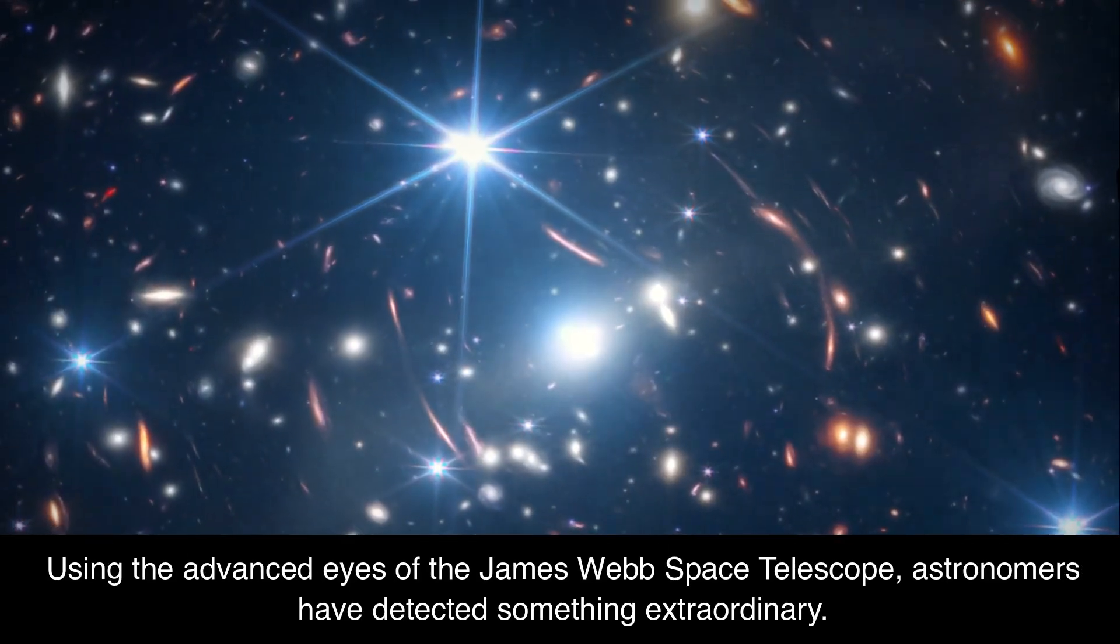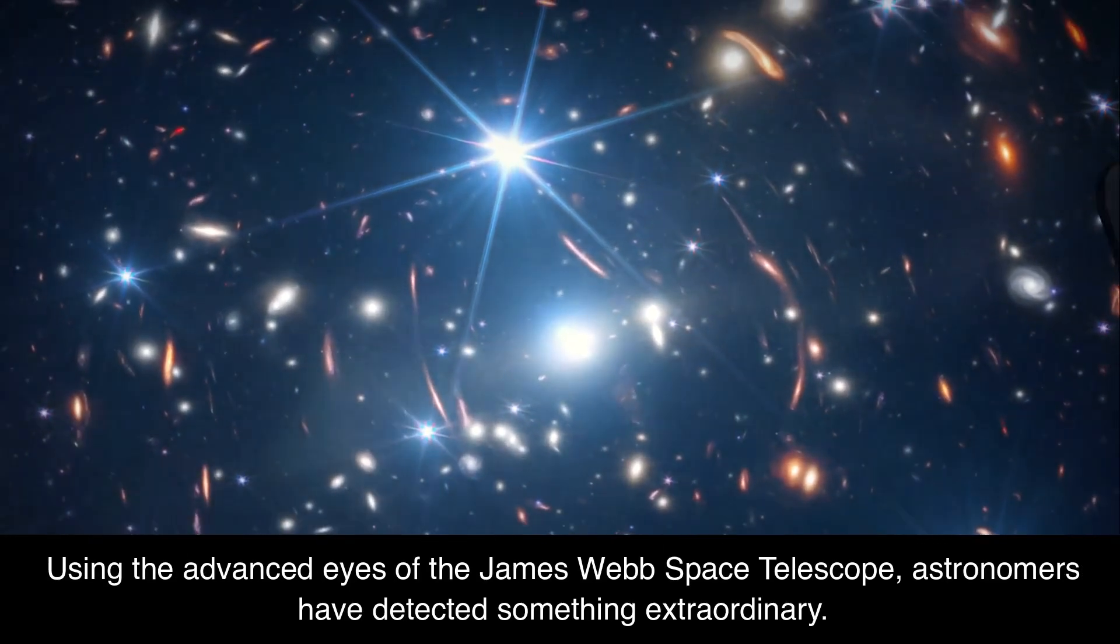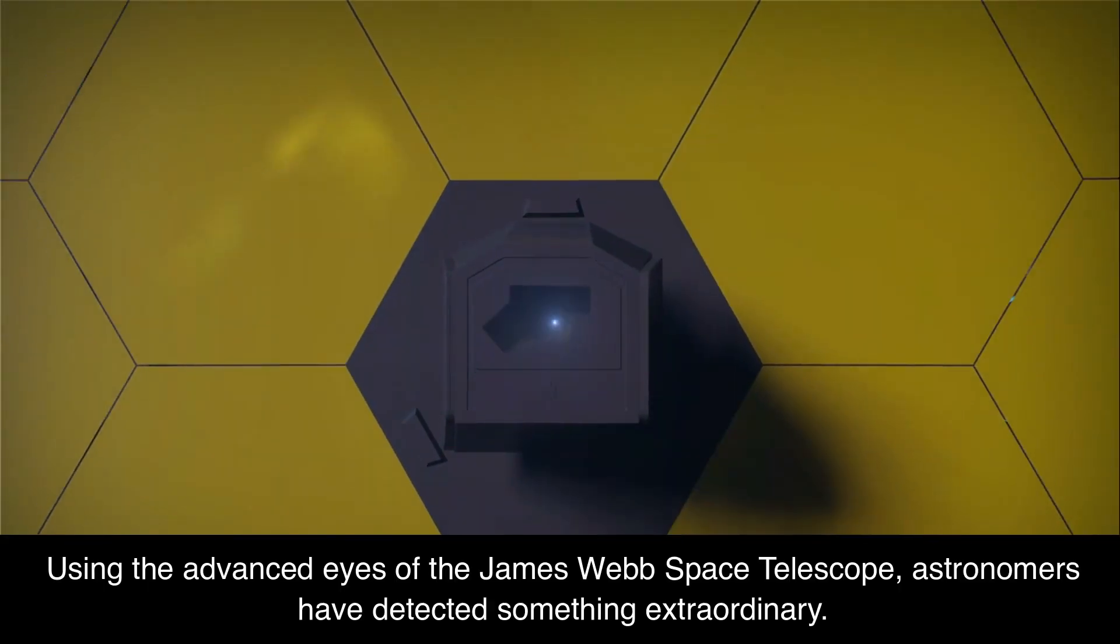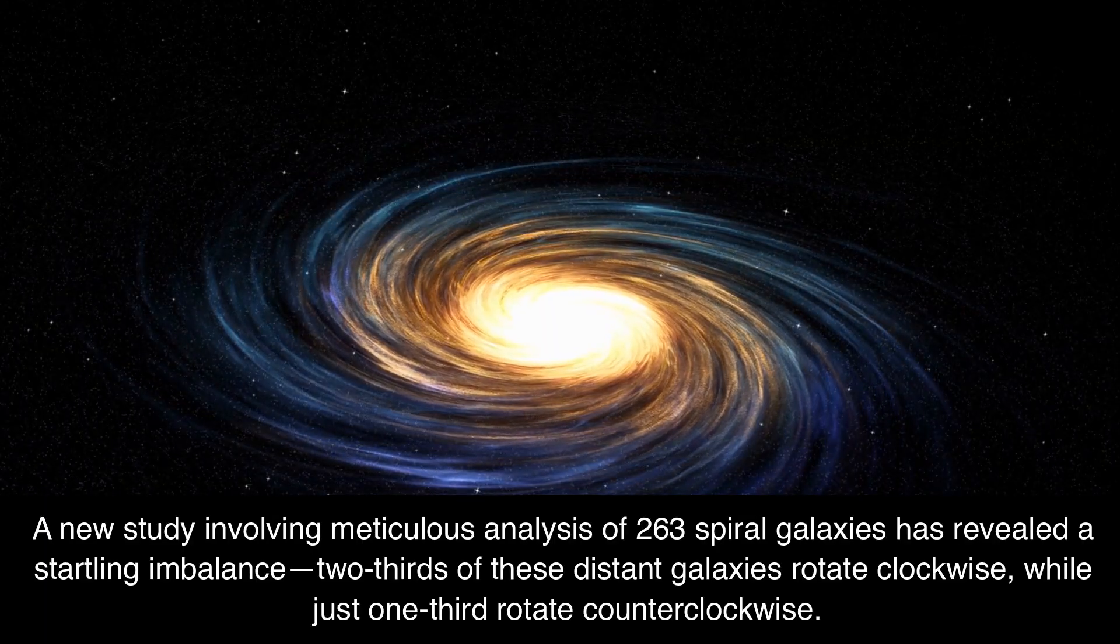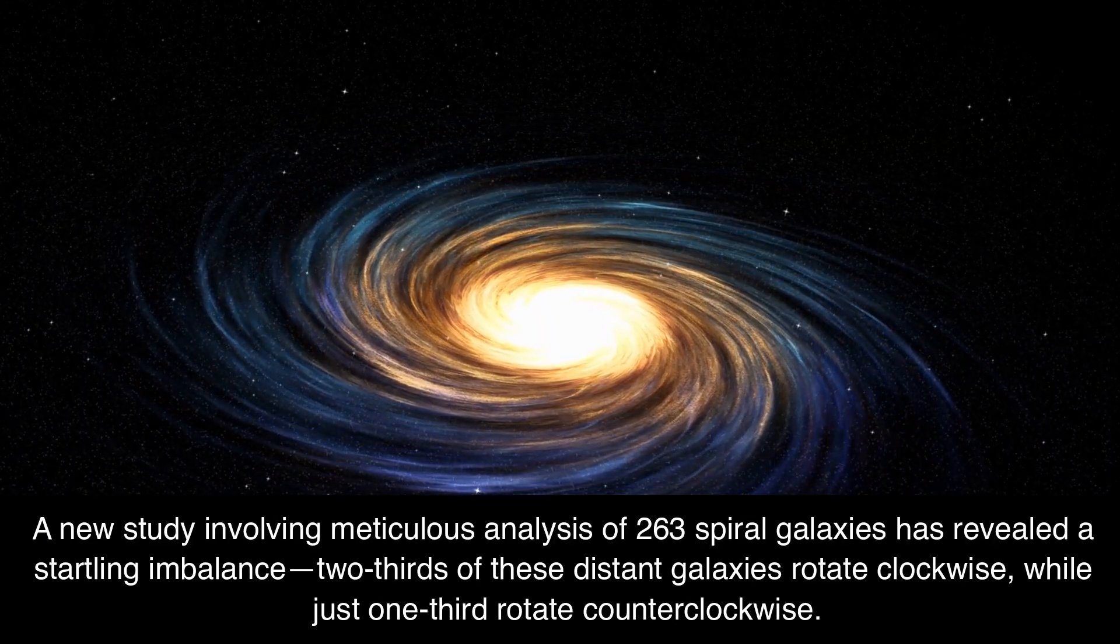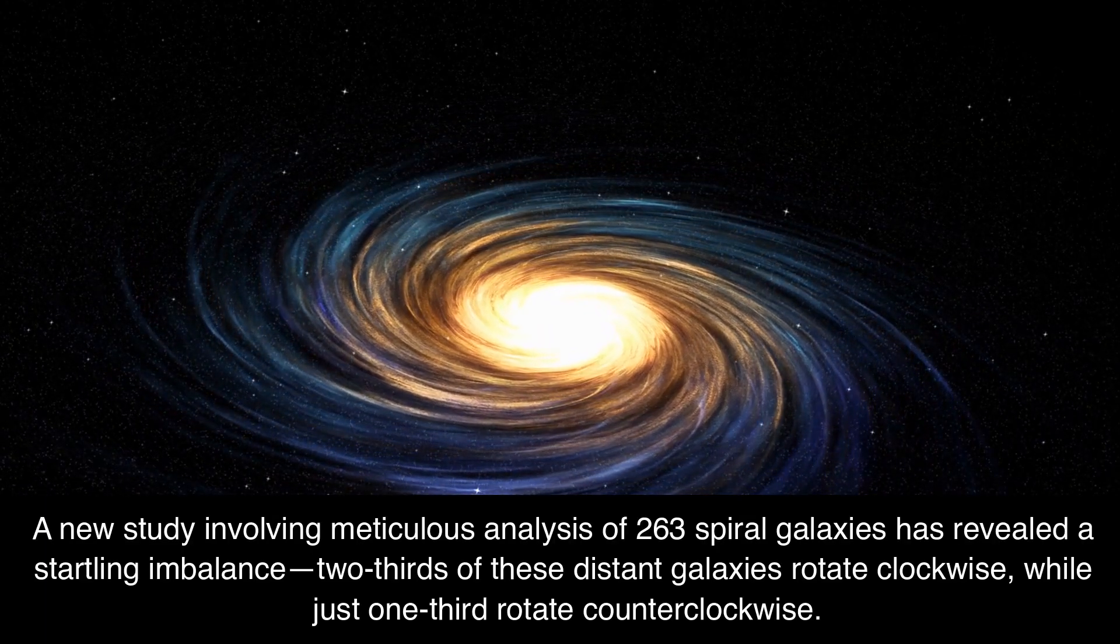Using the advanced eyes of the James Webb Space Telescope, astronomers have detected something extraordinary. A new study involving meticulous analysis of 263 spiral galaxies has revealed a startling imbalance.